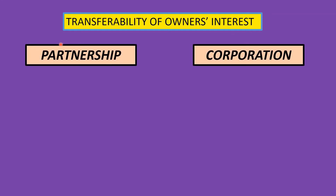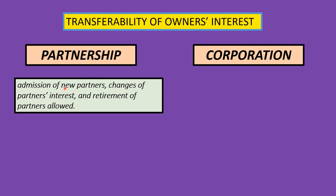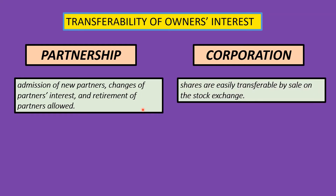Regarding transferability of ownership interests: in a partnership, admission of new partners, changes in partner interests, and retirement of partners are allowed, but each time one of these events occurs, a new partnership is formed and the old one ceases to exist. In a corporation, however, shares are easily transferable by sale on the stock exchange — anyone can sell their shares through a broker.